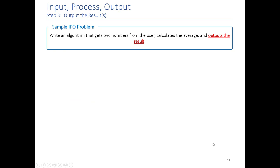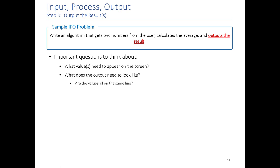So there's a couple things you need to think about when you're outputting. First is what needs to appear on the screen. What does that output need to look like? Sometimes we will ask you to print things out in a certain order. Sometimes we're going to ask for them to be on the same line or on different lines. So you'll have to be careful and pay attention to what's actually being asked.